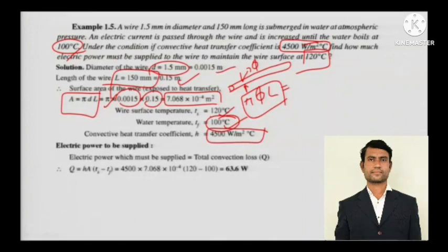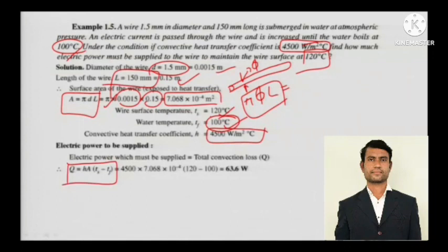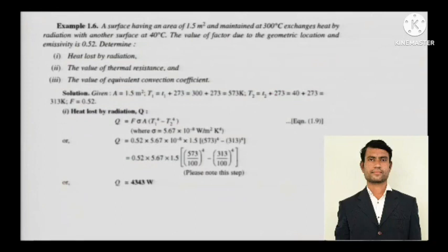The electrical power to be supplied equals the total convection loss, because whatever electrical power is supplied to the wire — surrounded by water — will be lost as heat into the water. Applying Newton's law of convection: Q = h × A × ΔT = h × A × (T_s − T_f). This gives the answer — a very simple numerical.